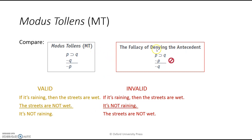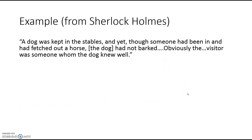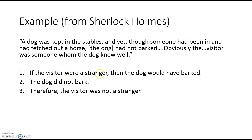Don't confuse modus tollens with the fallacy of denying the antecedent. If P then Q; but not P; therefore not Q — that doesn't follow. Example: If it's raining, the streets are wet. But it's not raining, therefore the streets are not wet — wait, that doesn't follow; maybe somebody hosed down the streets. You can't conclude that just because those two premises are true. Denying the antecedent is a fallacy. Here's a valid modus tollens example: If the visitor were a stranger, the dog would have barked. But the dog didn't bark. Therefore, the visitor must not have been a stranger. Modus tollens is very common and very powerful.